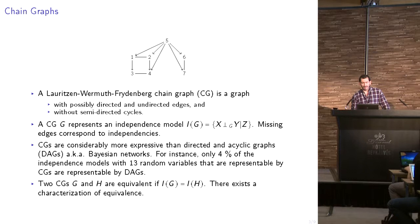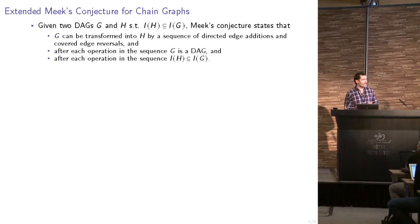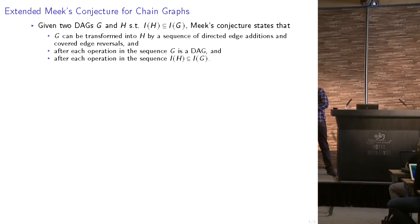As it happens with Bayesian networks, two different chain graphs G and H may represent the same independence model — they are called equivalent. In order to obtain a correct learning algorithm, I need a result which resembles the proof of the mixed conjecture for DAGs. The original mixed conjecture was proposed in 1997 and proven in 2002. In our paper, we do exactly the same but for chain graphs, and we need this result to obtain the learning algorithm.